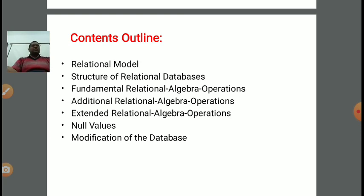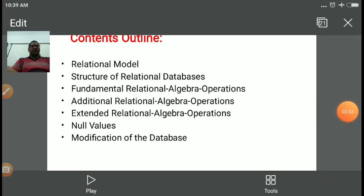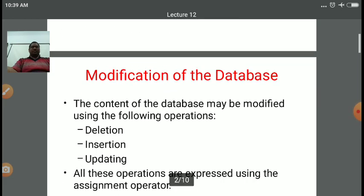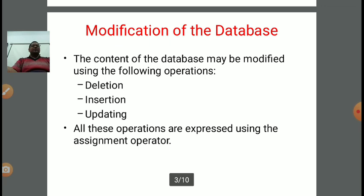Modification means we are changing the database — updating the row values, the column corresponding values, the name of a column. We are adding a new column or removing an existing column, and similarly for rows. All these things come under the category of modification of the database. The content of the database may be modified using the following operations: first is deletion, second is insertion, third is updation.